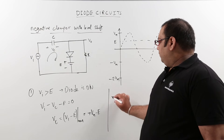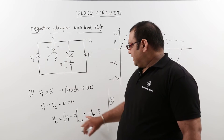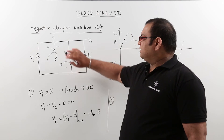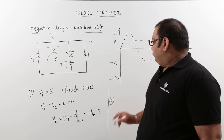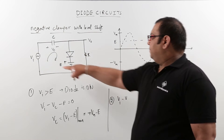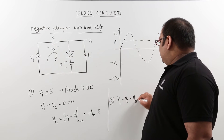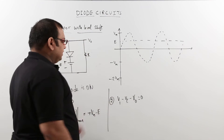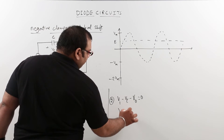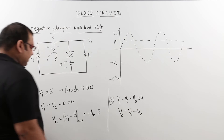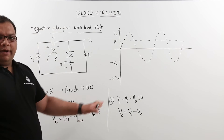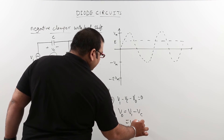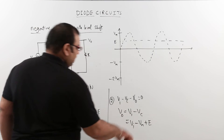When the capacitor is charged to this peak value, the diode goes into reverse bias — the OFF condition. In reverse bias, the loop equation is Vi minus Vc minus V0 equals 0. From this, output V0 equals Vi minus Vc. Substituting Vc equals Vm minus E, the output voltage is V0 equals Vi minus Vm plus E.